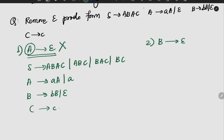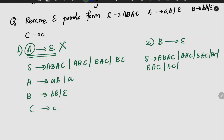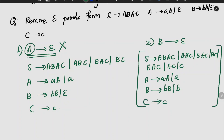After removing epsilon, we get the following: S gives a b a c, b a b c, b a c, b c, a a c, a c, and c. A gives a a a (no change). B gives b b, and if B is epsilon it gives b. C gives c. So this is our final answer without the epsilon productions.